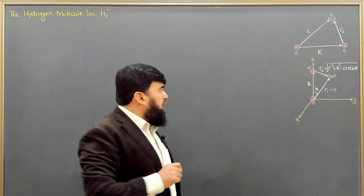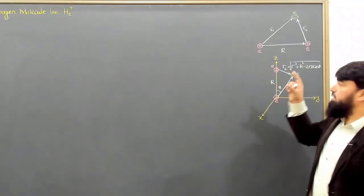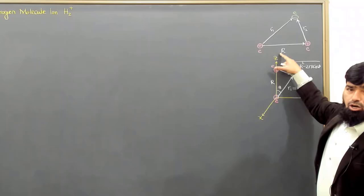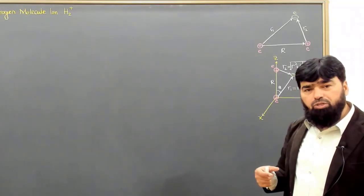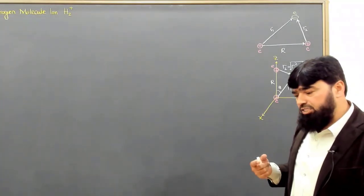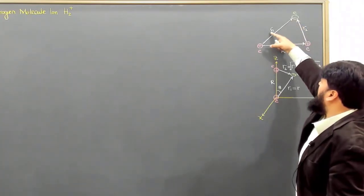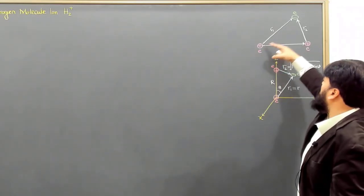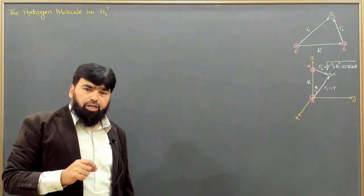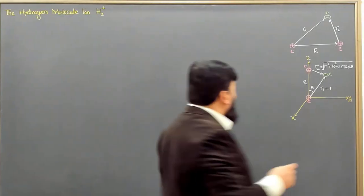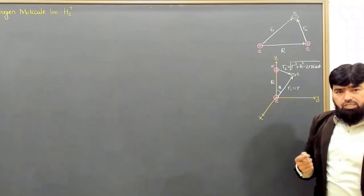So what is a hydrogen molecule ion? We have two protons fixed at a distance r — they are not moving and not contributing to the kinetic energy term. When we use the variational principle, we write the energy of a system as the Hamiltonian: kinetic energy plus potential energy. The only moving thing is the electron, which is at distance r1 from one proton and r2 from another proton. We will get the upper bound to the ground state energy, and this setup can be considered as a hydrogen atom in the presence of one proton.